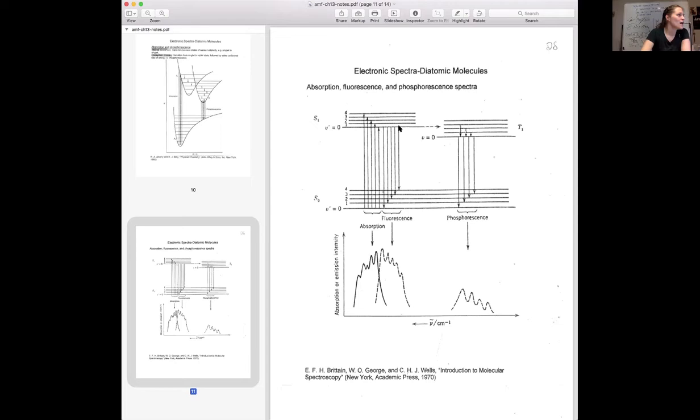And so then you'd have fluorescence. And so notice how all fluorescence are occurring from the lowest vibrational state of the higher electronic state going down. So this little peak came from this transition, and this little piggy came from this transition.